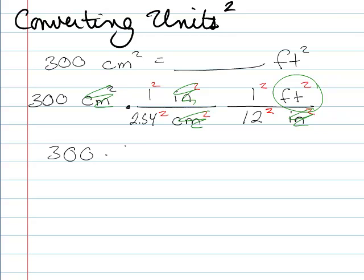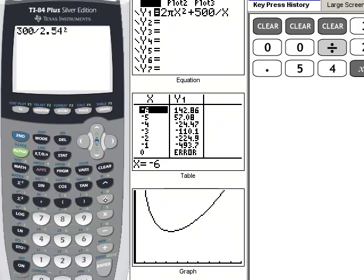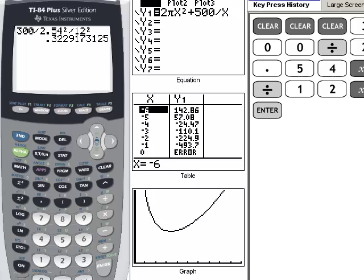So I've got 300 times 1 squared. We all know 1 squared is 1, so I'll just leave that out. So I've got 1 times 1 on the top and feet squared, and then 2.54 squared times 12 squared. So what I'm gonna do is I'm gonna pull up my calculator. I'm gonna go 300 divided by 2.54 squared divided by 12 squared, and I'll get 3.22917. Is that what it was? 3.22917.